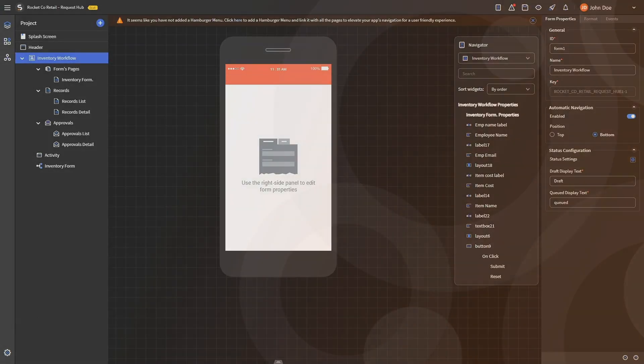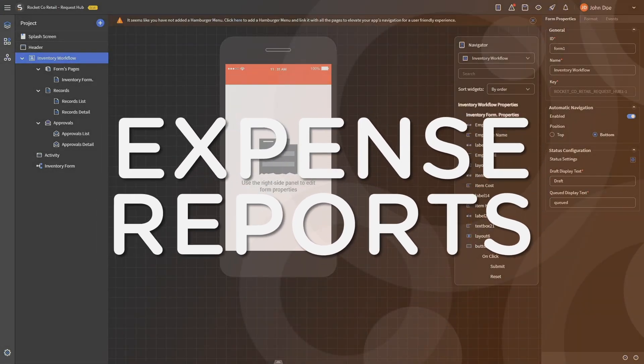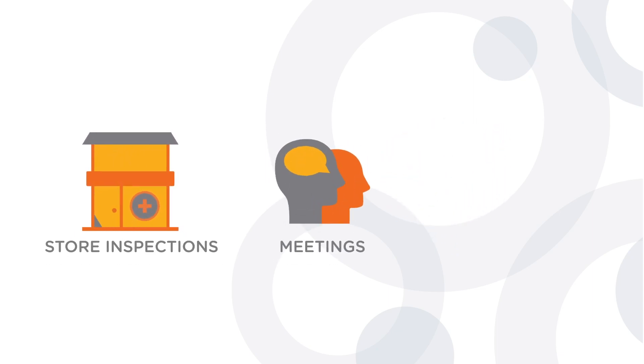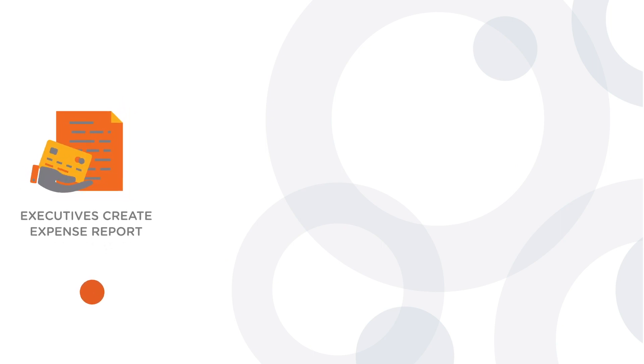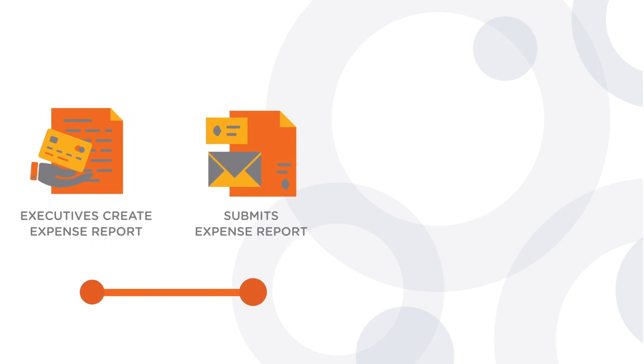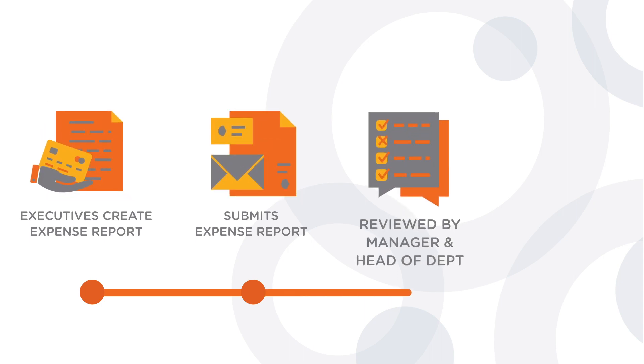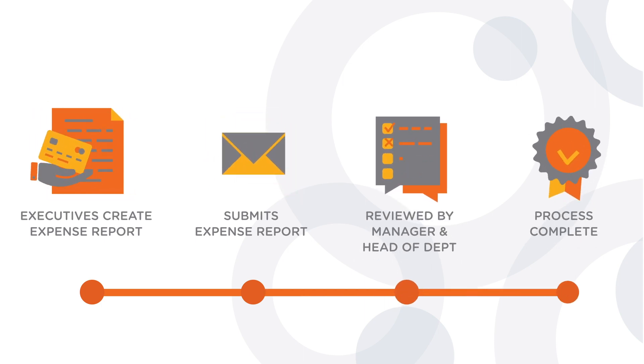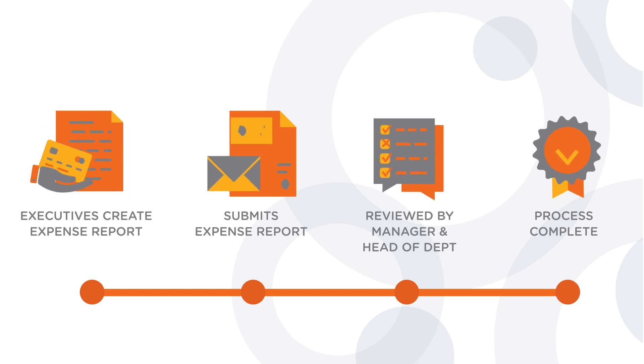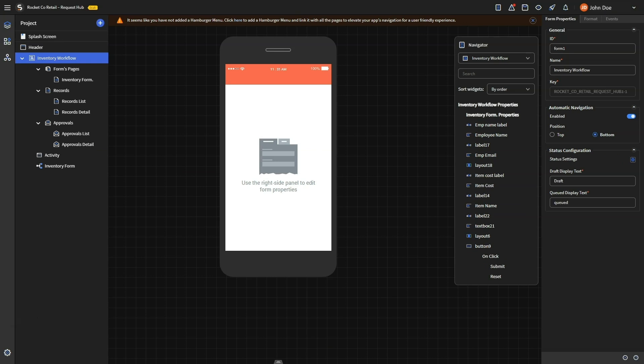Let's move on to the next business process: expense reports. RocketCo's retail executives often travel to different locations for store inspections, meetings, and training. To ensure they're reimbursed in a timely manner, they need to create and submit their expenses through a form for their manager's review and approval. To facilitate this, we'll build a form and a workflow that allows employees to submit expense reports.